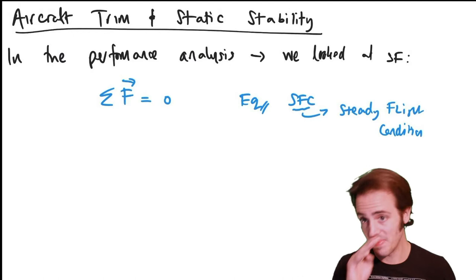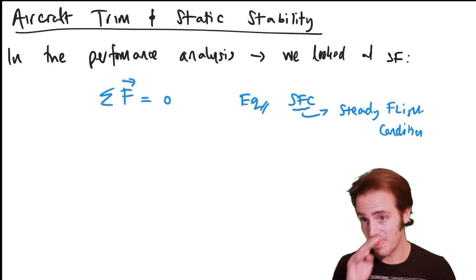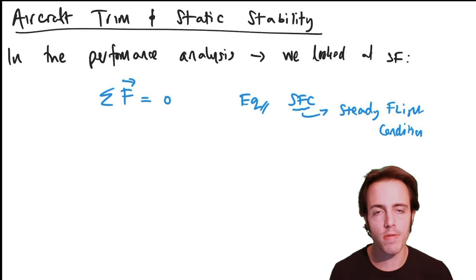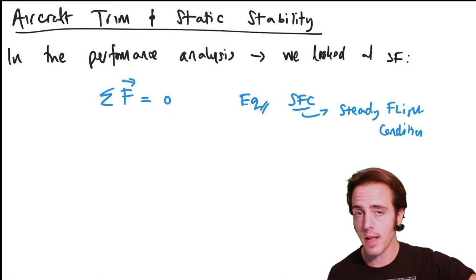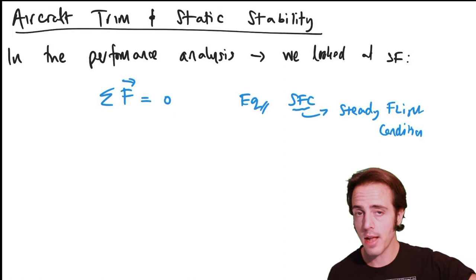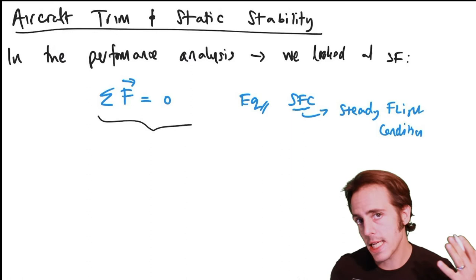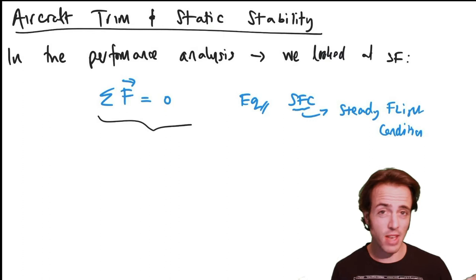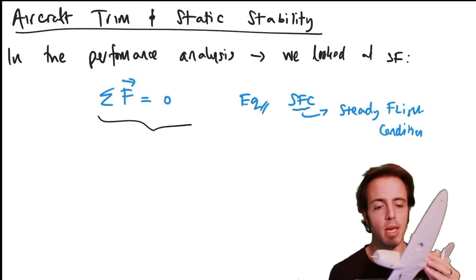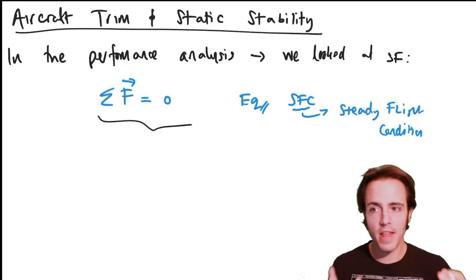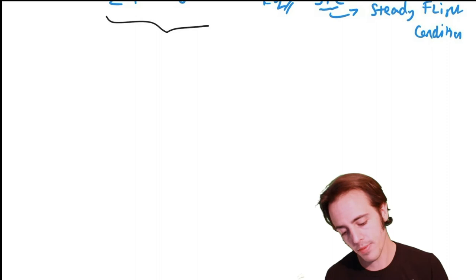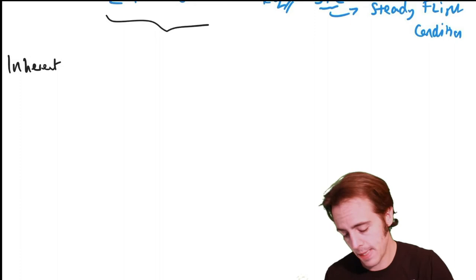That equilibrium condition enabled us to look at relationships between aerodynamic parameters and weight and thrust, and then look at the interchange of kinetic and potential energy to consider climbing and sinking. Inherent in this condition was another one we didn't explicitly mention: if we have zero forces acting on the aircraft and we are flying in steady flight, we are at a steady attitude — the orientation of the aircraft in 3D space. For that to happen, the sum of moments acting on the aircraft also had to be zero.